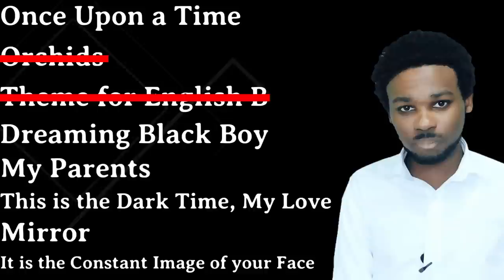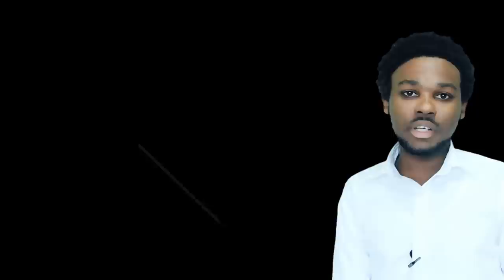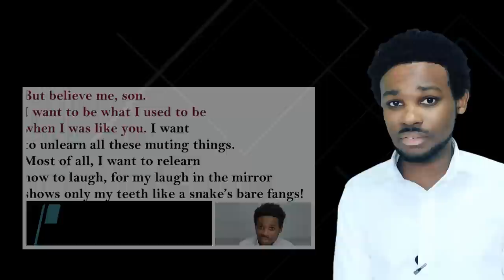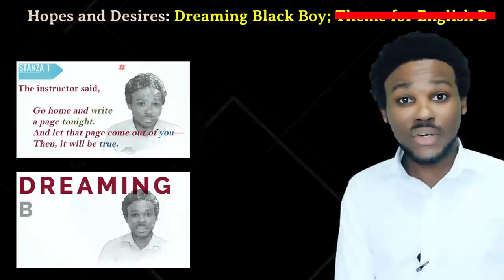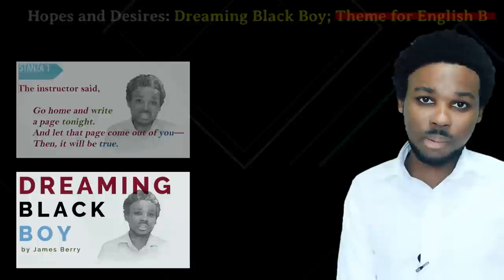Next theme: Hopes and Desires. The poems are Once Upon a Time, Orchids, Theme for English B, Dreaming Black Boy, My Parents, This is the Dark Time My Love, Mirror, and It is the Constant Image of Your Face. In Once Upon a Time, the speaker hopes to become more honest, true to himself, more courageous in expressing his feelings and being himself. In Dreaming Black Boy and Theme for English B, the speakers desire to overcome and eradicate the limitations and barriers of their race. They want to live equally and freely amongst everyone else.